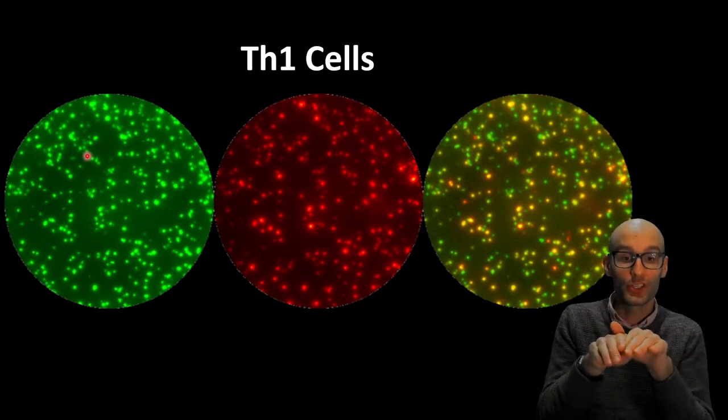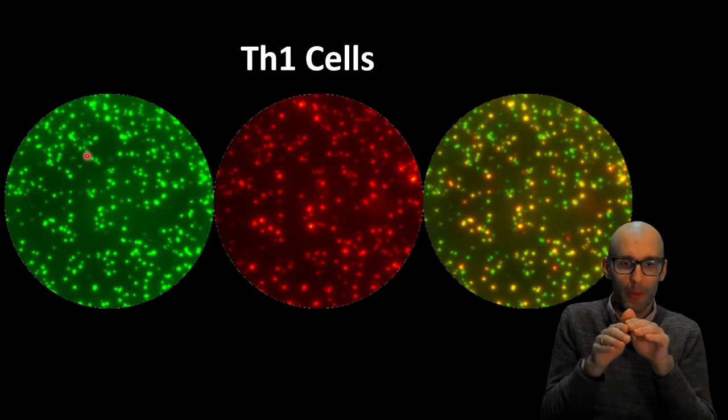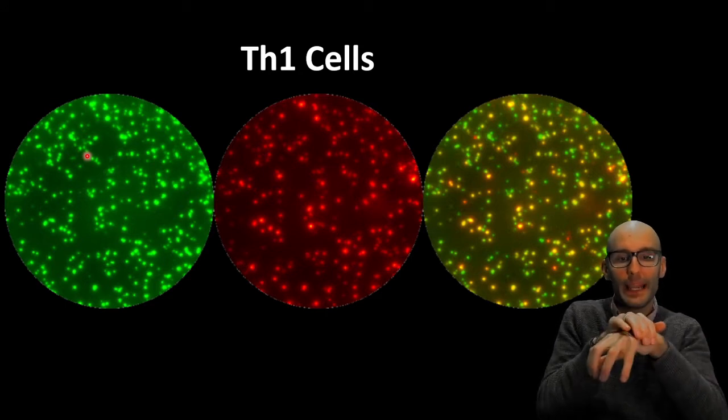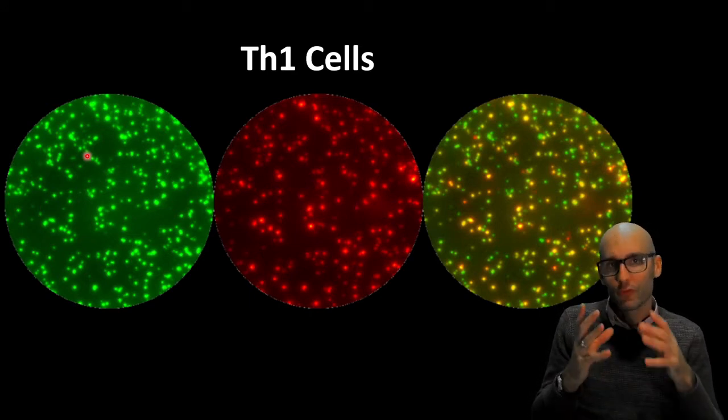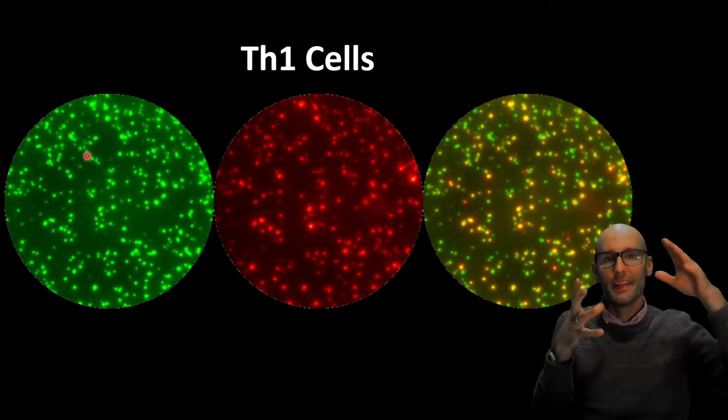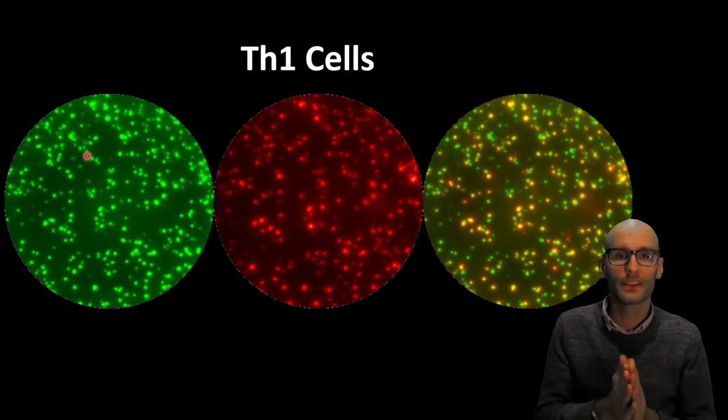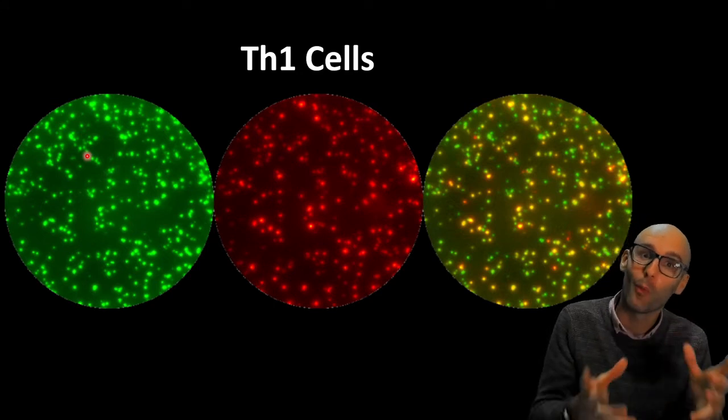So when the cell secretes a cytokine that matches the capture antibody, it will come out of the cell and immediately bind to the capture antibodies in the region around that cell. And then we put a fluorescent detection antibody on top.